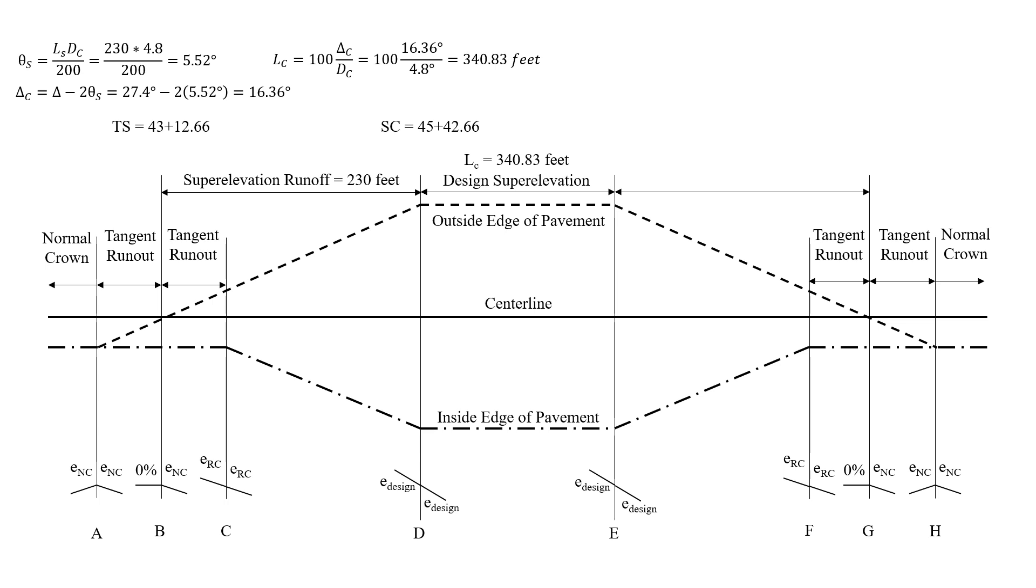So we're going to add 340.83 to our SC point to find our CS point, so that's 48 plus 83.49. And finally, the superelevation runoff, the length of the spiral gets added to our CS point to find our ST point of station 51 plus 13.49.